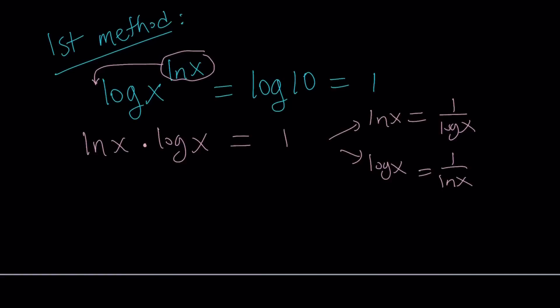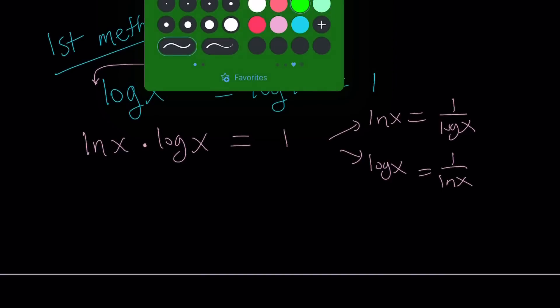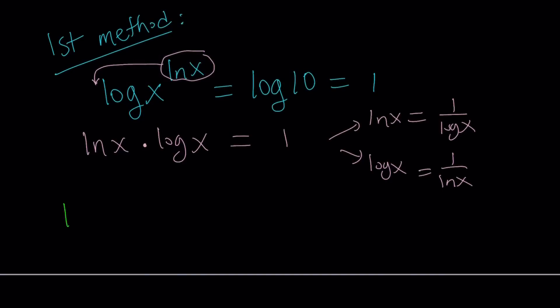We can use change of base formula, right? Obviously, and it can be used in different ways. So whatever base you choose, you can go with that. In this case, I'm going to use ln, which is the natural logarithm. So, how does the change of base formula work? Let's talk about it briefly, and then I will apply it to our situation.